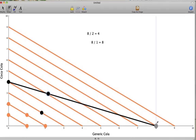What we find with perfect substitutes is that the optimal consumption point will always occur on one of the axes. And this makes sense because if Coca-Cola and Generic Cola are truly the same to us, meaning we are completely indifferent between the two, we are going to purchase whichever one is cheaper.